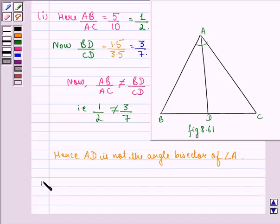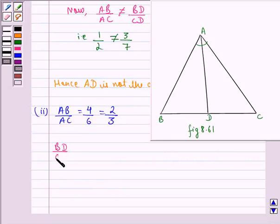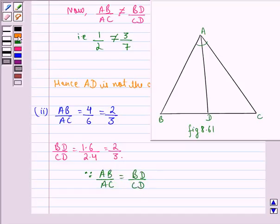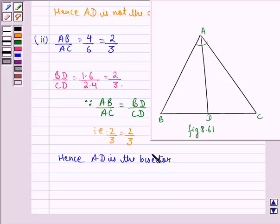Now let us see the solution to the second part. Again we find AB/AC. AB is given as 4 cm and AC is given as 6 cm. So AB/AC is 4/6. If we divide numerator and denominator by 2, we get 2/3. Now we find BD/CD. BD/CD will be 1.6 cm by 2.4 cm, which equals 2/3. Since AB/AC is equal to BD/CD, that is 2/3 = 2/3, hence AD is the bisector of angle A.